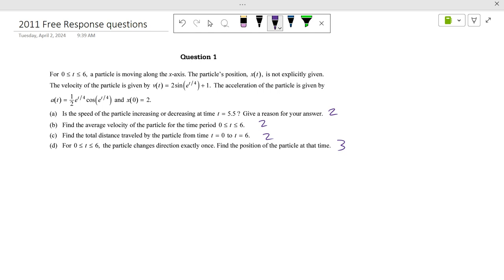When we look at this, from zero seconds to six seconds, the particles move along the x-axis, the particle's position is not explicitly given. The velocity of the particle is this, its acceleration is this, and at time zero, it is at two. Is the speed of the particle increasing or decreasing at time equals 5.5 seconds?